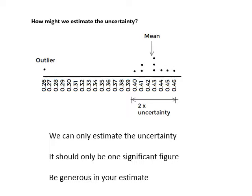We can only estimate the uncertainty. Obviously it's uncertain, so we can only estimate what the uncertainty is. It should only be one significant figure. So it's 0.42 plus or minus nine percent. You wouldn't say plus or minus nine point three percent - you cannot be that certain as to what the uncertainty is.